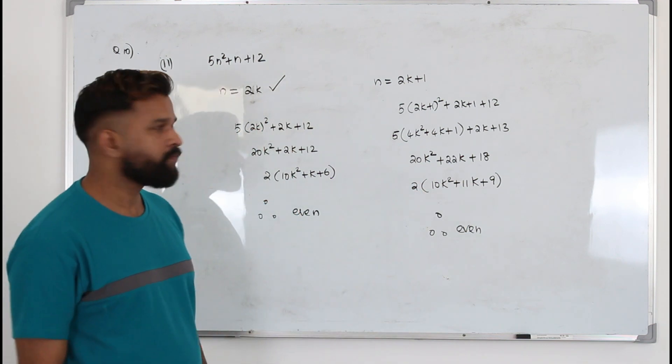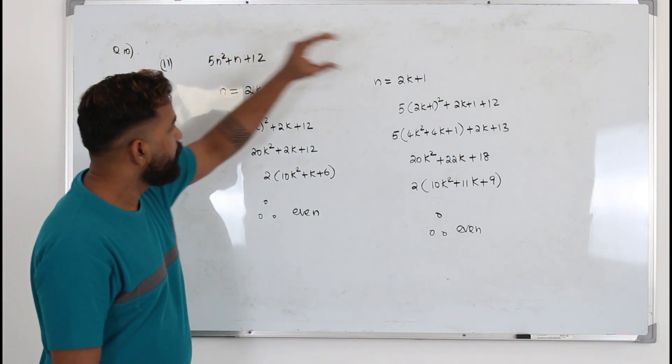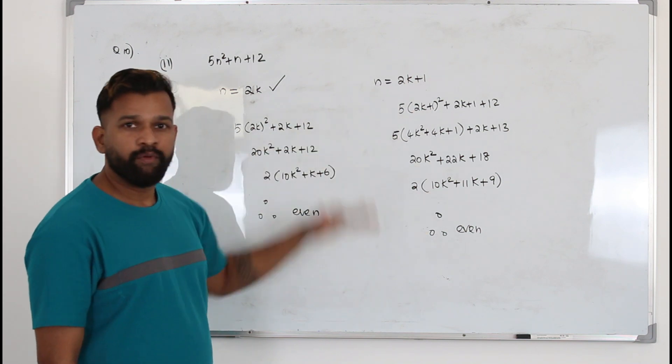So that's how we prove this. You need to take the even number first, n equals even number, and n equals odd number, and prove this separately.